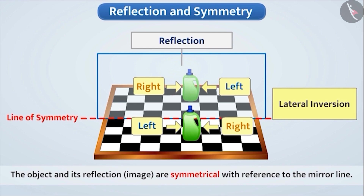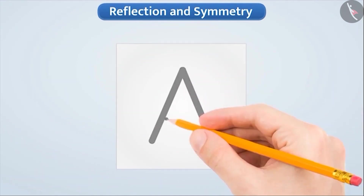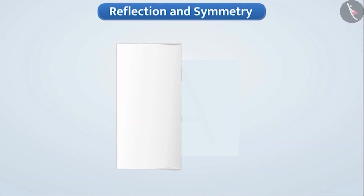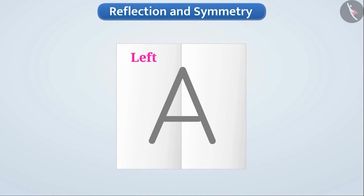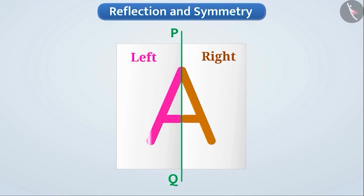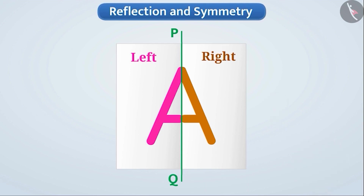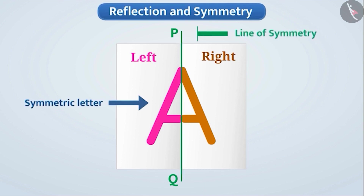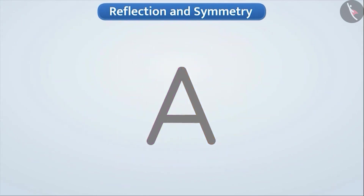Let's understand it more comprehensively. Suppose we draw letter A on a piece of paper. If we fold this paper from the middle, we will get two equal parts of A — the left part and the right part. Let us give the name PQ to the line formed by folding the paper. The left half of A and the right half of A are exactly identical to each other. This shows us that A is a symmetric letter and PQ is a line of symmetry. Imagine that we have placed a mirror in place of the symmetric line PQ. The figure appearing in the mirror will be exactly the same as the half A hidden behind the mirror. Therefore, the left part of A and its mirror reflection are symmetric.